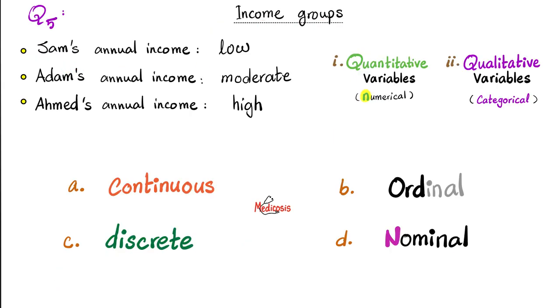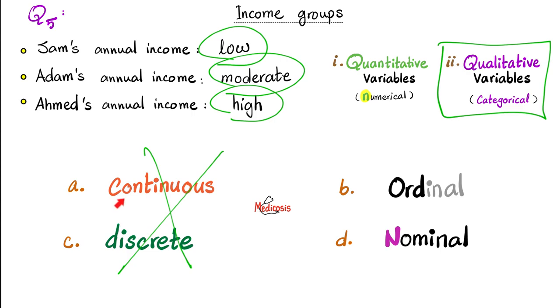Next, income groups. Sam's annual income, low, Adam's, moderate, Ahmed's, high. Quantitative versus qualitative. What do you think? Well, I cannot put a number on them here. These are just three different categories. So categorical or qualitative. Since they are categorical or qualitative, they can neither be continuous nor discrete. They have to be ordinal or nominal. Okay. Nominal means just three different categories. That's it. But ordinal means that they are three categories, but they have an order. Do these have an order? Yes. There is low, there is moderate, there is high. These are ordinal variables because they can be ordered from the least to the most.